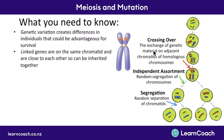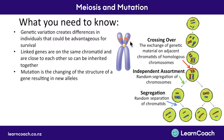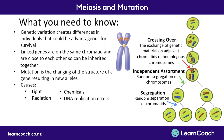Next, we learned about linked genes — these are on the same chromatid, very close to each other, and are often inherited together. Third, we learned about mutation: this is when we change the structure of a gene, changing the DNA structure, which results in new alleles or new expressions of that gene. This can happen due to light, chemicals, radiation, or DNA replication errors.